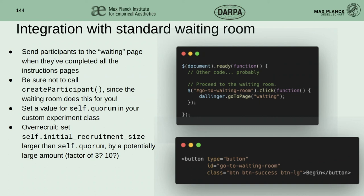This is the minimum stuff you have to do to integrate with the default waiting room. Step one: in the JavaScript for the instruction page, you'd have a button like 'I've read the instructions, I'm ready to proceed.' When they click that button, you send them to the waiting page, which is the predefined Dallinger waiting room. The critical bit that activates the entire waiting room system is the presence of a non-zero quorum value on your experiment class. If you require 10 people, you set quorum equals 10.